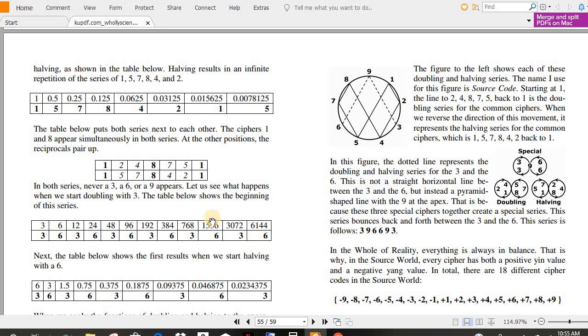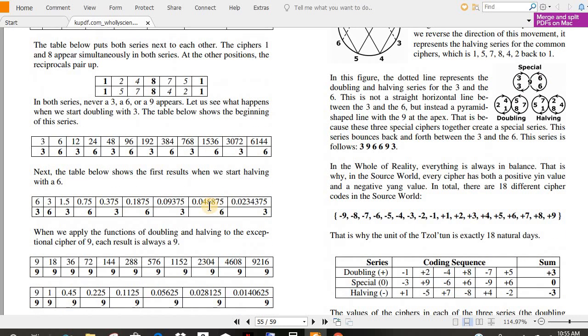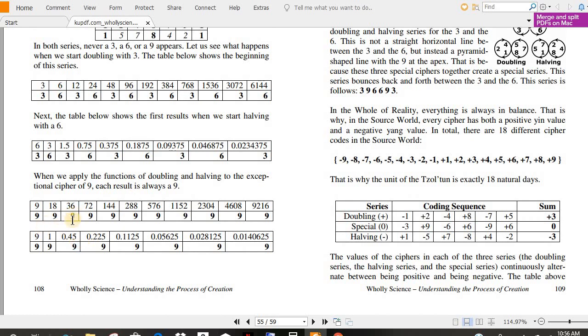Next, the table below shows the first results when we start halving with 6. 3, 6, 3, 6, 7, and 5, 3. So it goes 3 plus 7 is 10, plus 5 will be 15, and 1 and 5 is 6. They've screwed up their chart here. That's okay, though. 7 and 5 is 13, and that would be a 3. They just messed it up. 9 is the same way. 9, 9, see, going by nines.